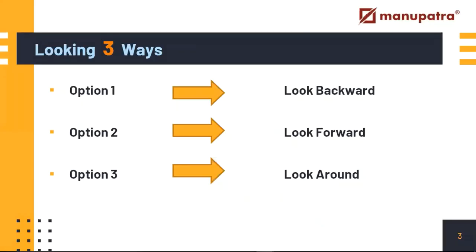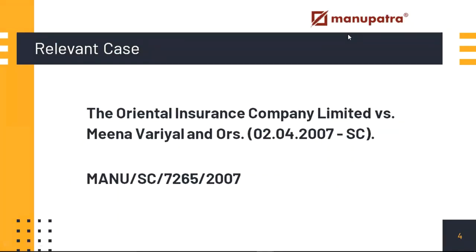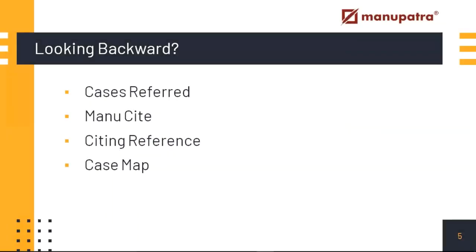For the One Good Case method to work, you have to look at it from different angles. You can look backward — what were the cases the court cited in its decision? You can look forward using Manupatra to find later cases which cited your one good case. Or you can look around — what were the cases that discuss the same legal issue? We have different features for each of these. For this case study we'll be using the case: Oriental Insurance Company Limited versus Mina Virial and Others. Let's start with looking backward, covering cases referred, Manu Cite, citing reference, and case map.